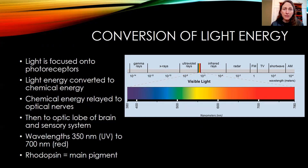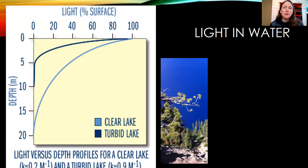The main pigment they use to convert light energy into chemical energy is rhodopsin. I'm going to pause the video here and we're going to go on to the properties of light and water, because that's necessary to understand how insects see.